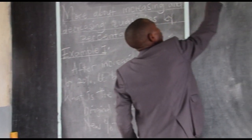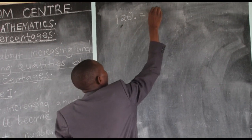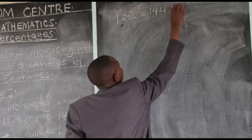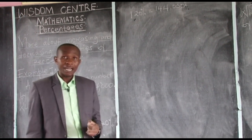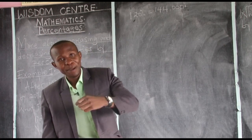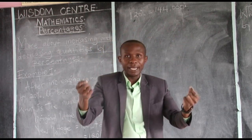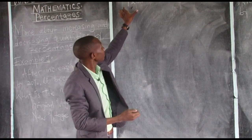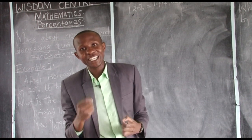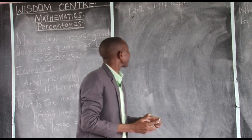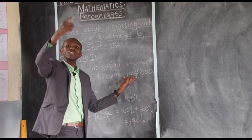We shall say: 120% gives us 144,000. Where is 120 coming from? It is already beyond 100 — they have made an increment of 20, that's why you have 120. So 120 is your new percentage. And the number 144,000 is also new because it was already increased, meaning it is the new number.